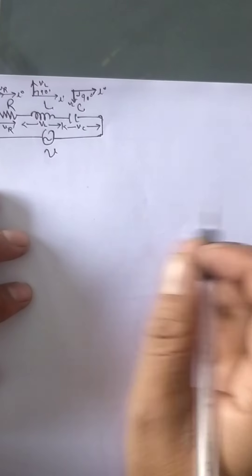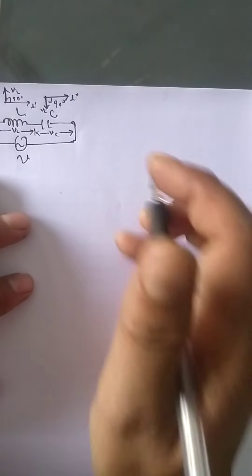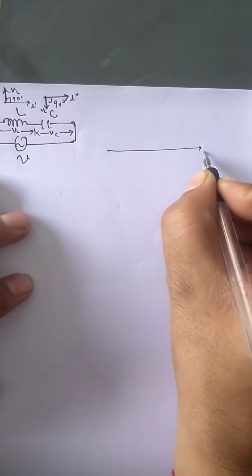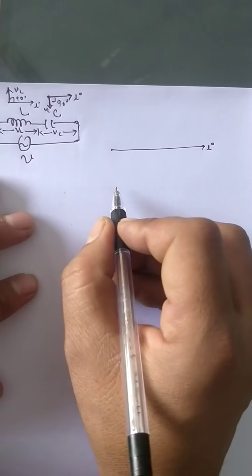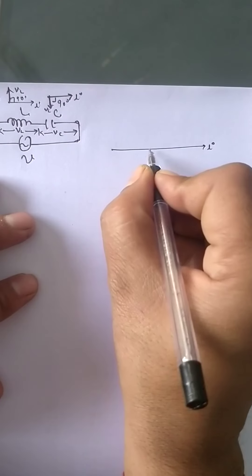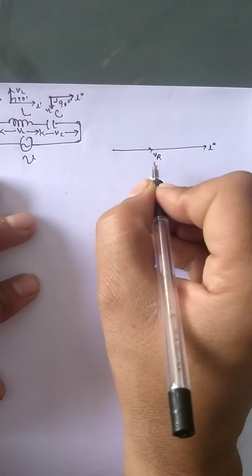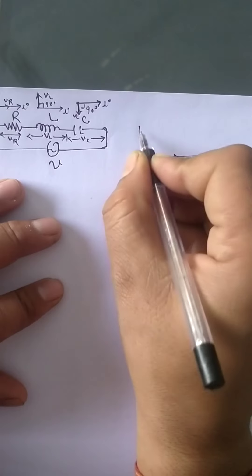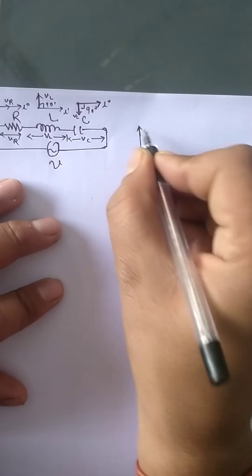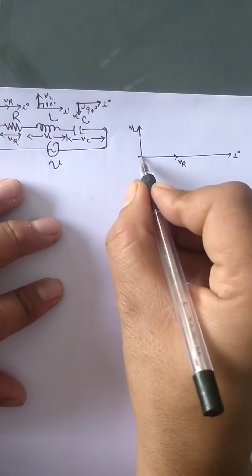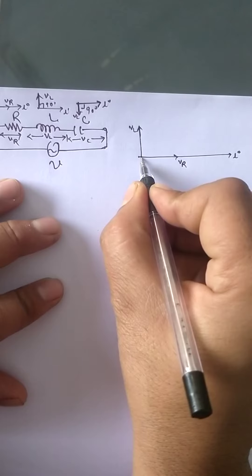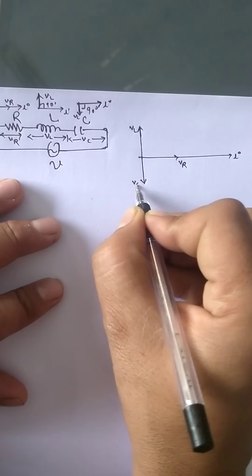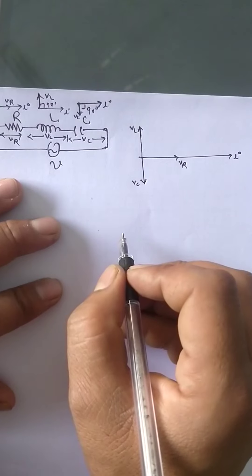Now we have to look at the combined phasor diagram for the series RLC circuit. Taking the current I as the reference axis, the voltage of resistance Vr will be in the same phase, the voltage of inductance Vl will lead the current, and Vc will lag the current.